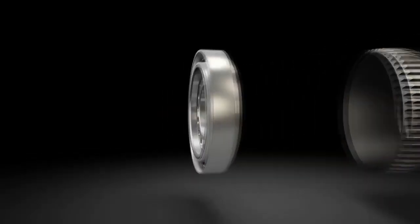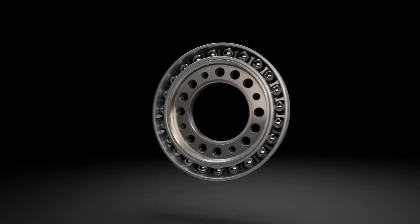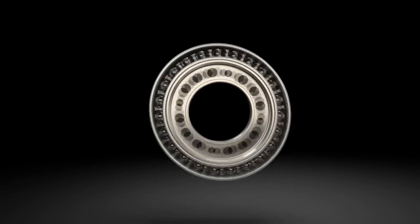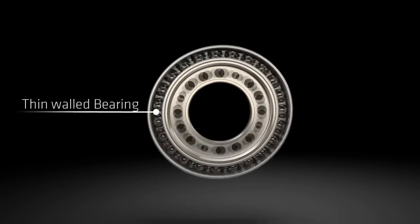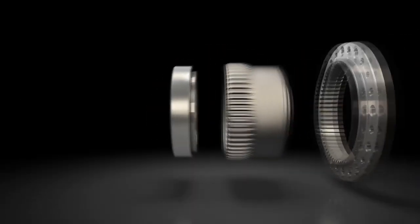It works by using an elliptical wave generator to deform a flex spline so its teeth engage with the circular spline. As the wave generator rotates, the flex spline rotates slowly due to the difference in teeth, achieving high gear reduction.